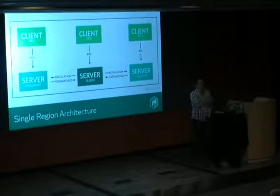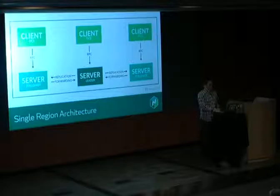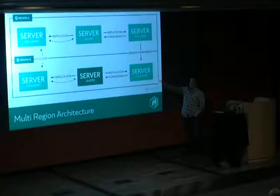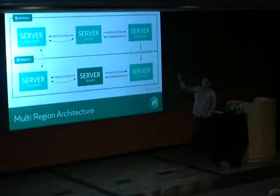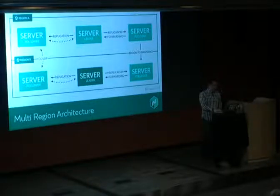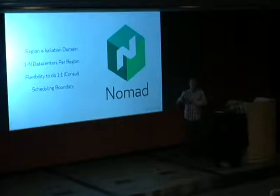One key UX feature is request forwarding: you can run 'nomad run' on any node — client or server — and it finds its way to the leader. For multi-region architecture, each region runs a separate server cluster communicating across the WAN via gossip. You can submit a job targeting region B from region A and it forwards automatically.